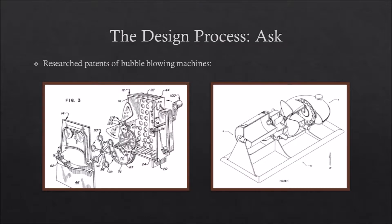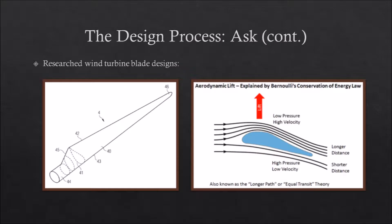Let's start at the beginning of the design cycle with ask. When we were assigned the task of creating a bubble blowing machine, we were given almost no guidance on how to design it. Therefore, the first thing we did was look at some patents for bubble blowing machines. Every patent seemed to follow the same pattern of having a wind source that blows towards bubble wands that are constantly rotating through bubble solution. We decided to follow their lead.